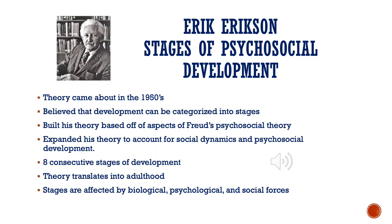Next, we're going to dive into Eric Erickson's stages of psychosocial development. His theory came about in the mid-1950s, and he believed that development can be categorized into different stages, going from infancy all the way into adulthood. He built his theory based on aspects of Freud's psychosocial theory, then expanded it to account for social dynamics and psychosocial development. His theory comprises eight consecutive stages affected by biological, psychological, and social forces. Each stage focuses on positive or negative internal and external conflicts — you'll see each stage has something versus something else.